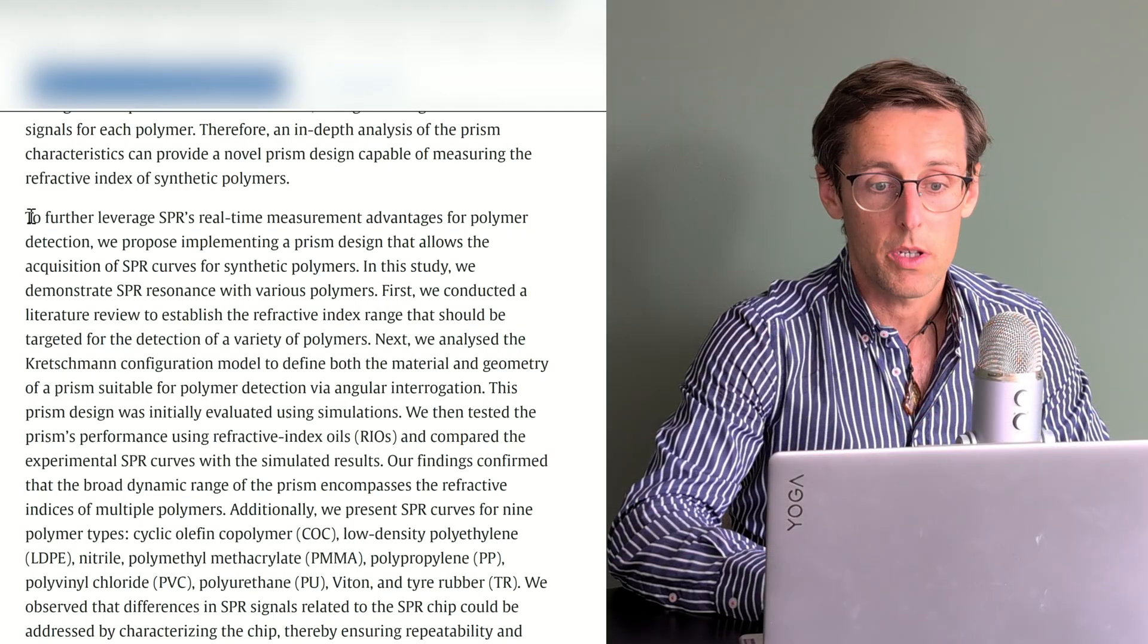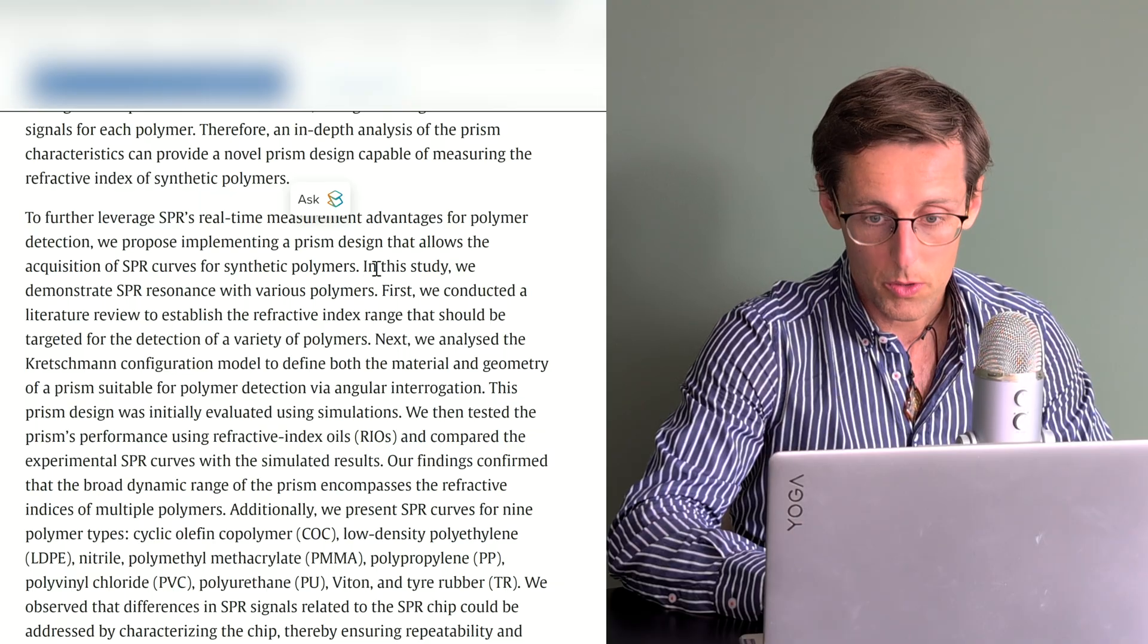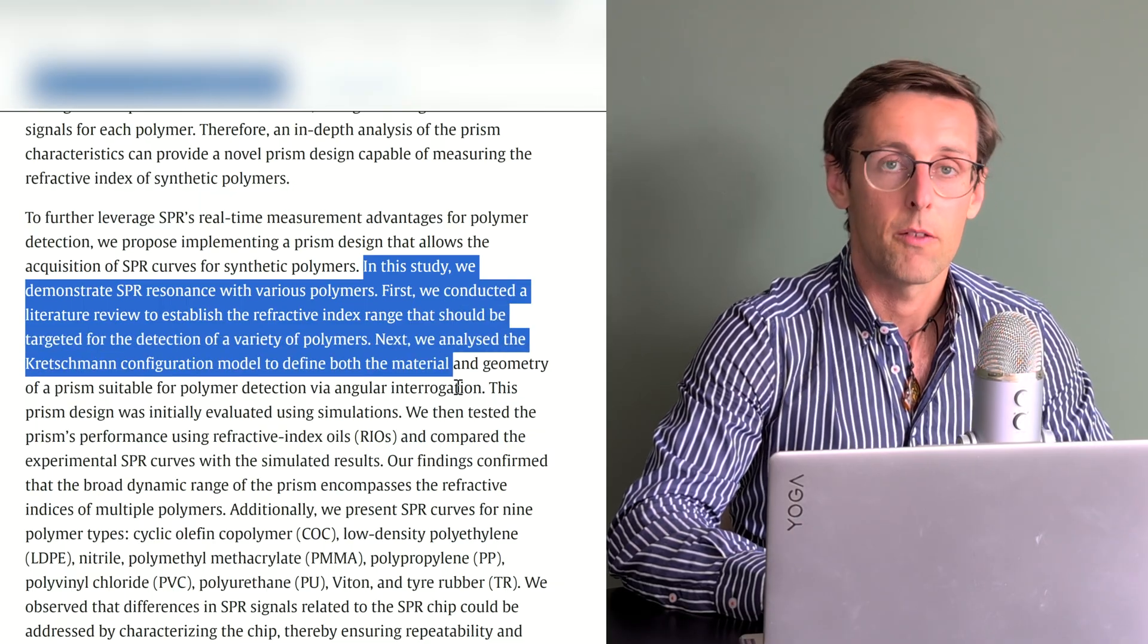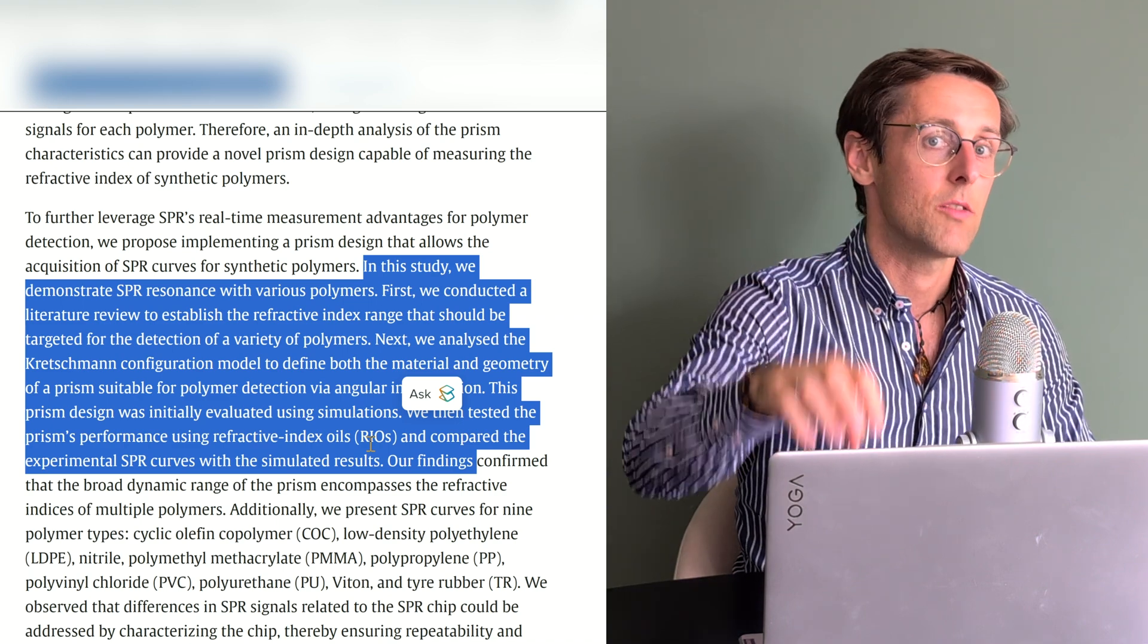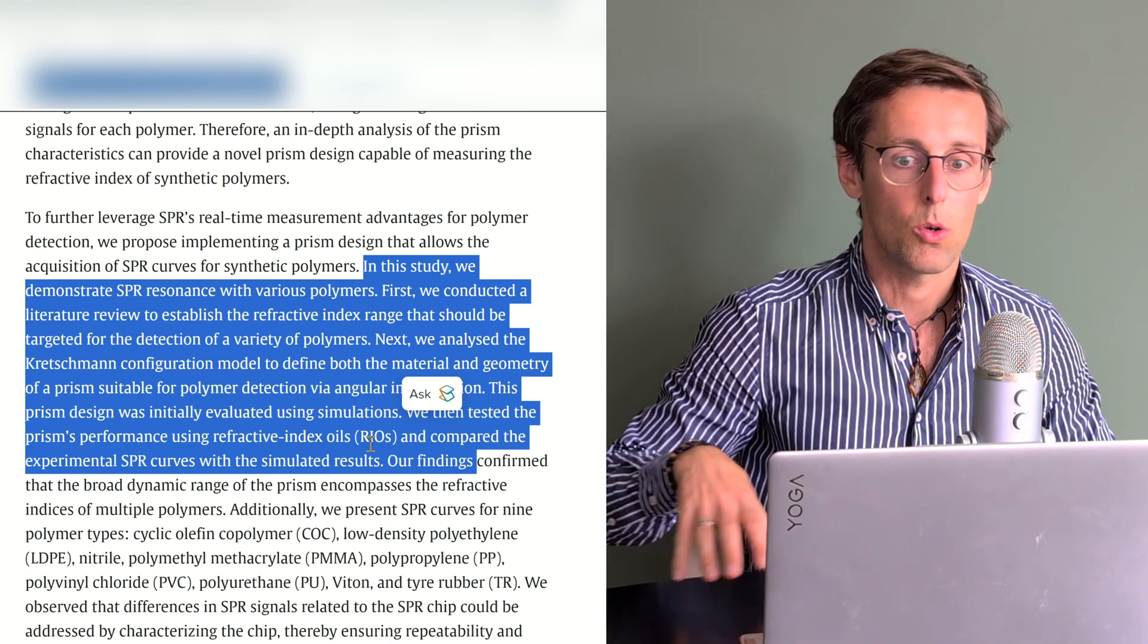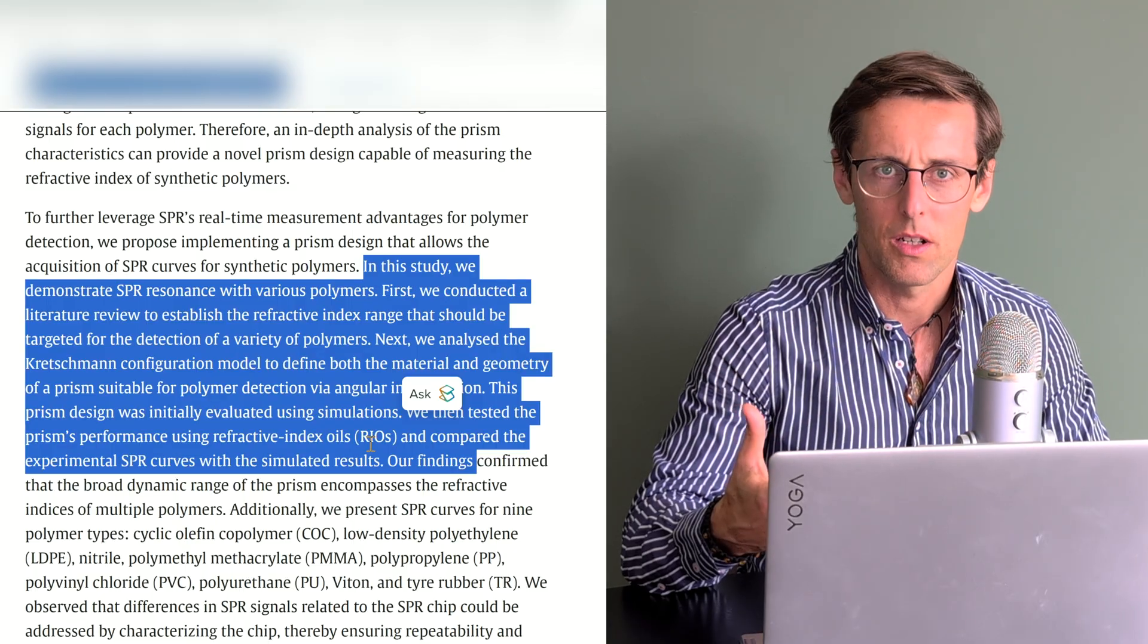This is a good example in this paper because we've got the aim of the paper here, and then in the following sentences the writer presents what they did step by step to achieve that aim. This is very typical of papers in exact sciences especially, where the methods are perhaps a little bit more complicated.